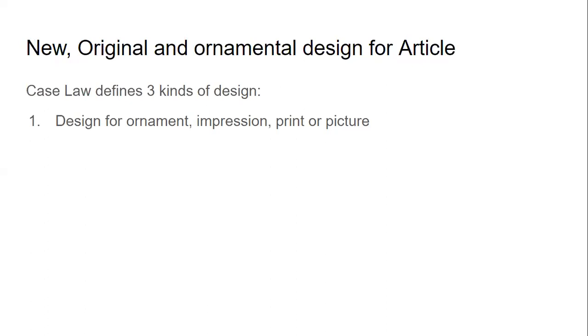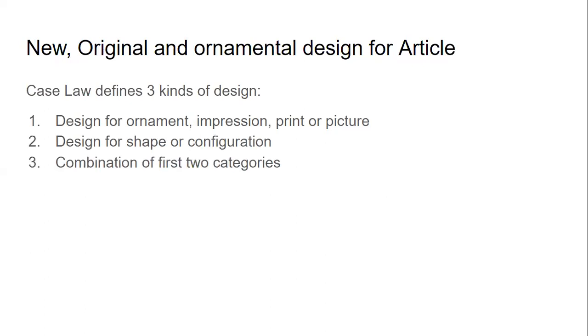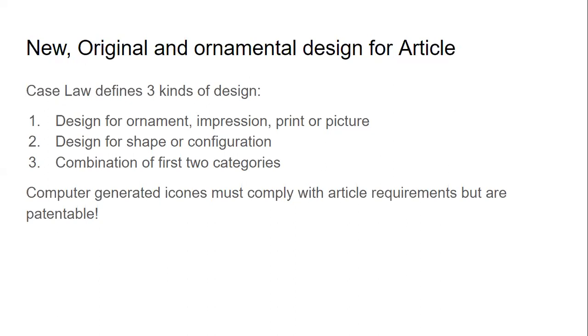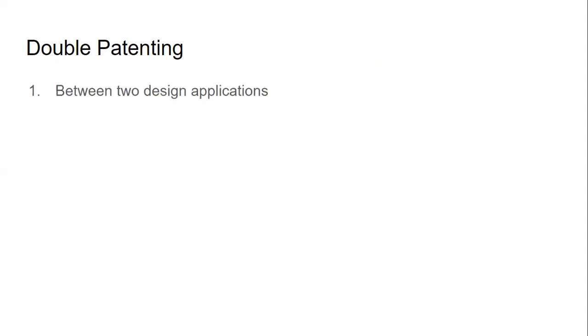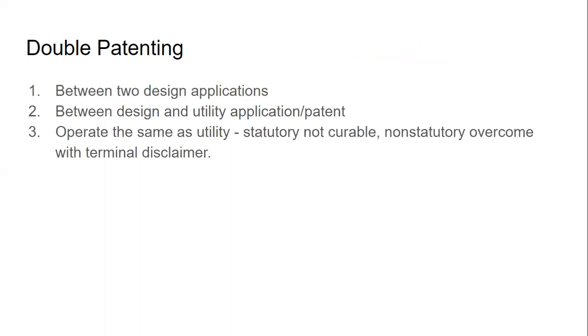For statutory aspects, case law defines three kinds of design: a design for ornament, impression, print, or picture; a design for a shape or configuration; or a combination of the first two categories. Computer-generated icons must comply with article requirements but are patentable. For double patenting, it can happen between two design applications or between a design and utility application or patent. It operates the same as utility — statutory double patenting is not curable, while non-statutory can be overcome with a terminal disclaimer.